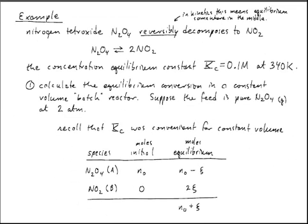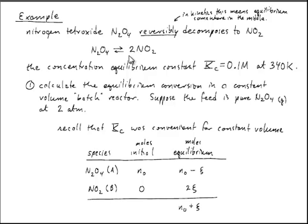Let's do an example. Looking at a gas phase reaction, we have nitrogen tetroxide reversibly decomposing into NO2. A special note: in thermodynamics, reversible means done infinitely slowly, passing through a manifold of equilibrium states. In kinetics, reversible has a very different meaning — it means that the equilibrium for the reaction lies somewhere in the middle, neither completely to the right nor completely to the left. So when we talk about a reversible reaction here, we mean a reaction that proceeds without going to completion.